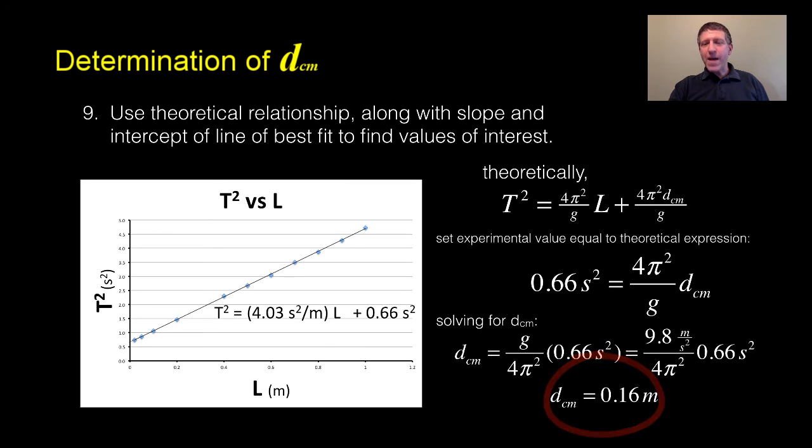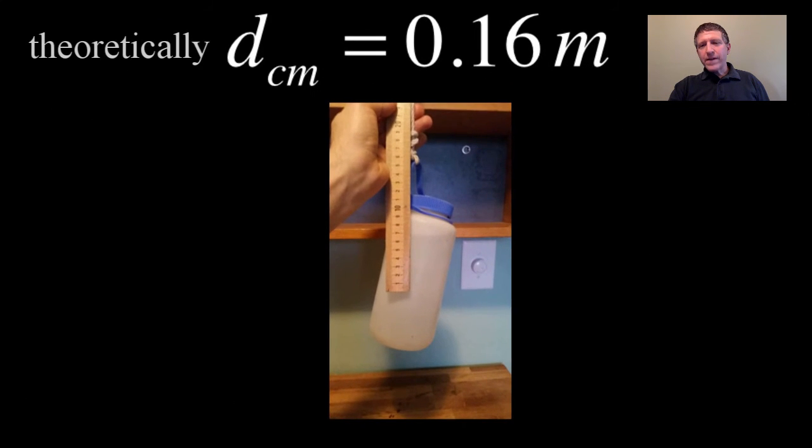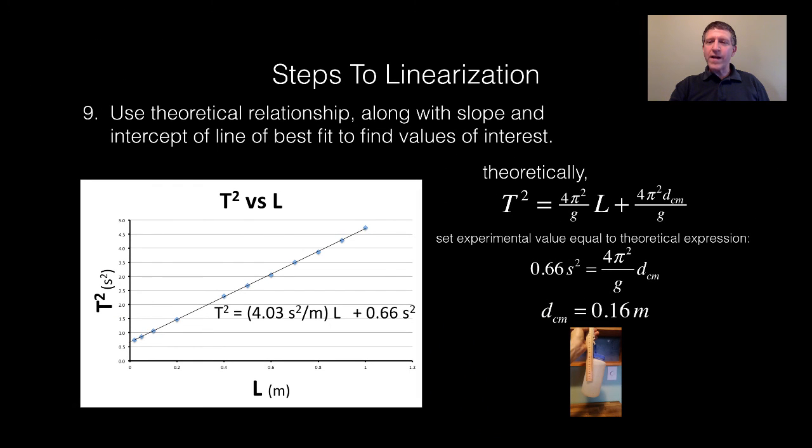I just knew this was going to happen, so I took a picture of this. There it is right there. Take a look. Does our theory agree with our experiment? Look at the distance from the end of the rope to what I'm approximating as the center of mass of that thing. Sure enough, it's about 0.16 meters. So that further verifies that I did this right, my theoretical equation is right, and I've actually done all my calculations correctly.